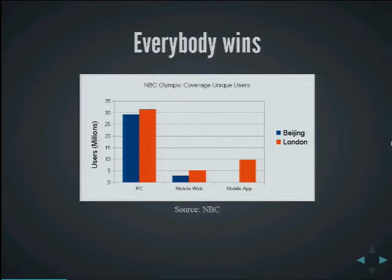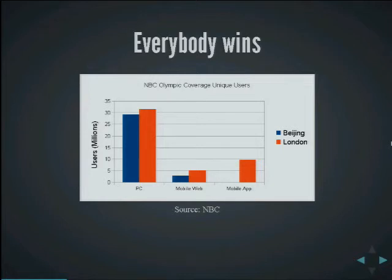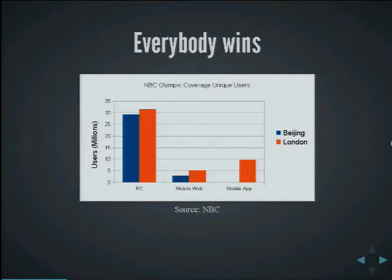Another anecdotal statistic from this summer reinforces this idea that everything is growing. NBC gave out these numbers halfway through the London Olympics, showing the number of users of their digital content across various platforms — comparing the complete Beijing Olympics versus half of London. The big story is mobile apps: they didn't have a mobile app in Beijing, and in London they had 10 million users. But there was also growth in mobile web and PCs — it's digital engagement across all devices, as opposed to a simple shift.